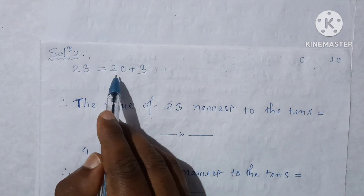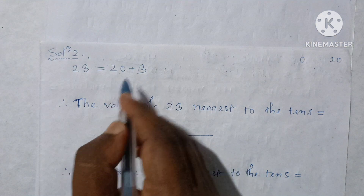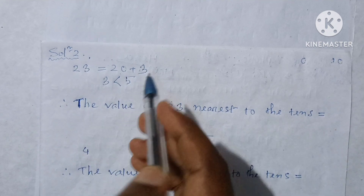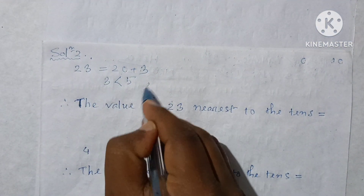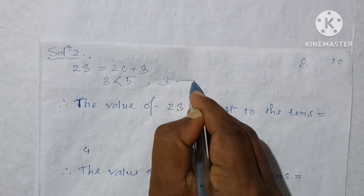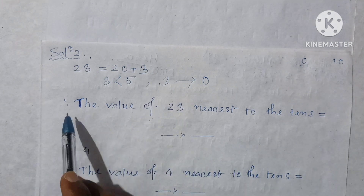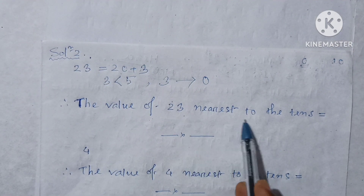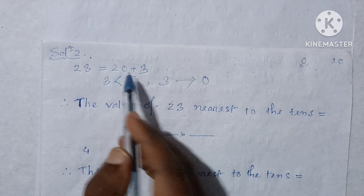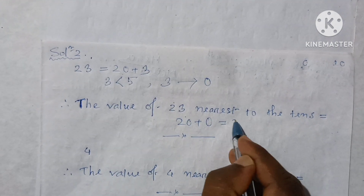Number 23: 20 plus 3. Since 3 is less than 5, 3 is rounded off to 0. So the value of 23 nearest to the tens is 20 plus 0, equal to 20. Answer: 20.